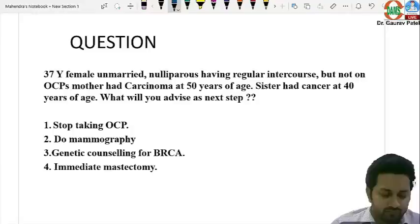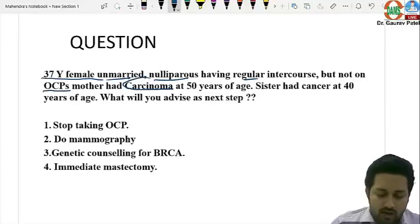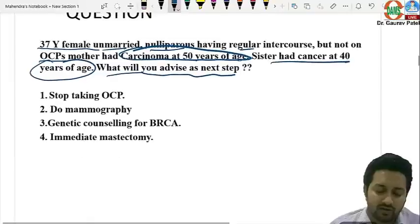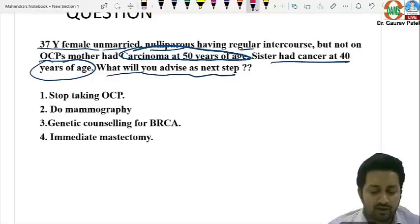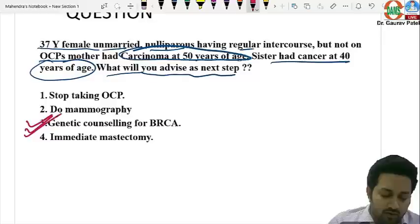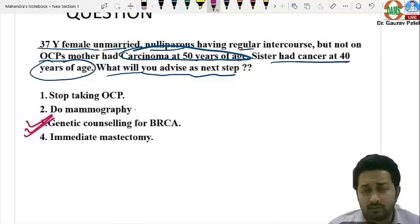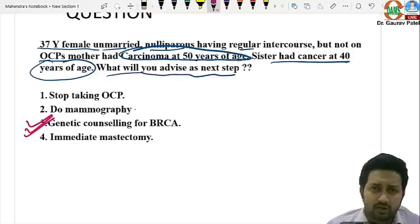A 37-year-old unmarried nulliparous female has regular intercourse, is not on OCPs, her mother had carcinoma at 50 years, and her sister had cancer at 40 years. Given this strong family history of breast carcinoma, the next step is genetic counselling for BRCA. Mammography will be required but immediate mastectomy is not indicated at this point.